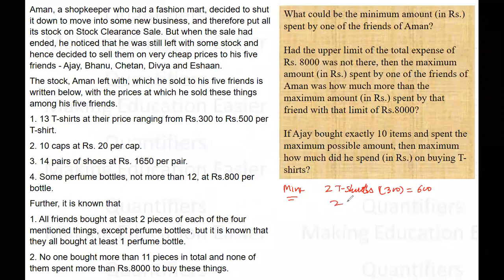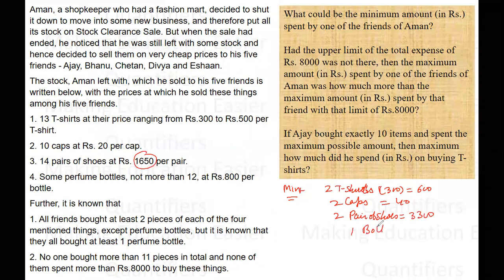Two caps will cost him 40 rupees. Two pairs of shoes — each pair at 1650 — will cost him 3300. And one bottle of perfume costs 800 rupees. Adding all these values: 600 plus 40 plus 3300 plus 800 equals 4740. So 4740 rupees is the minimum amount that the person has to spend.